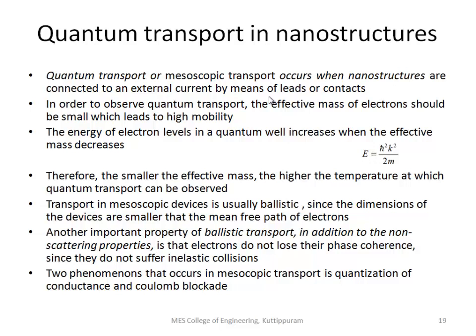So how do we observe this type of transport? For that, certain conditions should be satisfied. The first thing is the effective mass of the electron should be very small. When the effective mass decreases, the mobility will be high. Energy will increase because energy is equal to h-cross squared k-squared by 2m, so effective mass and energy are inversely proportional.